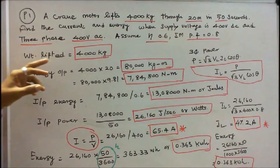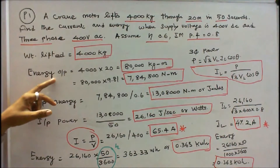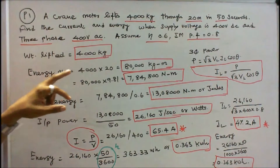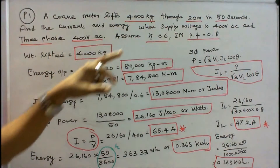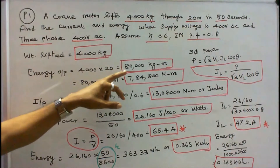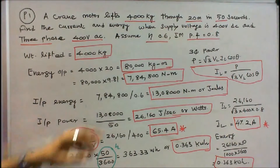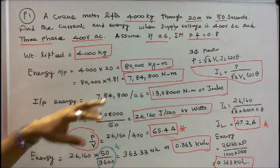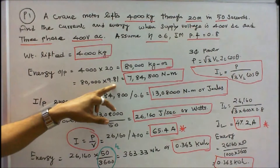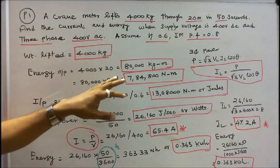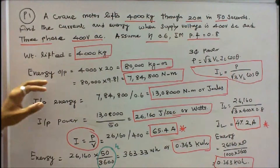Weight lifted is equal to 4000 kg. Energy output is equal to 4000 into 20, that is equal to 80,000 kg-meter. We have to convert it into Newton-meter: 80,000 into 9.81, that is equal to 7,84,800 Newton-meter. That is the output.